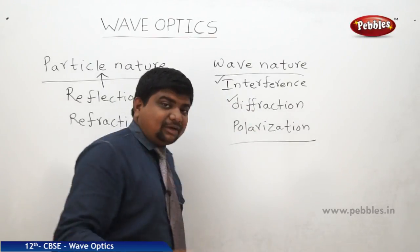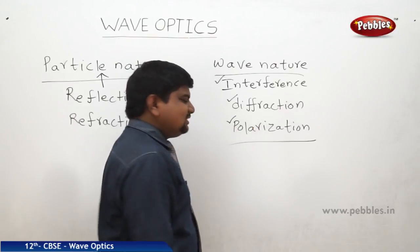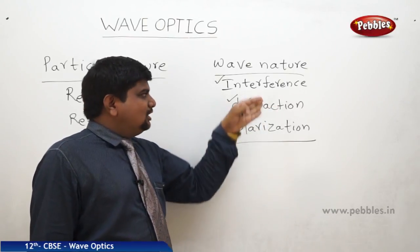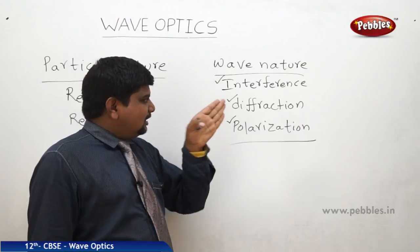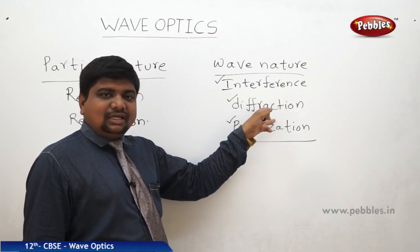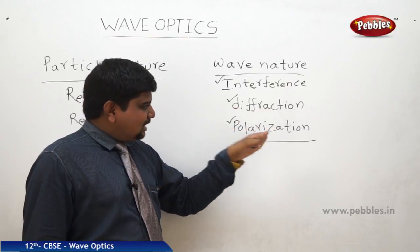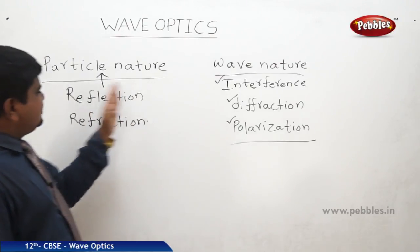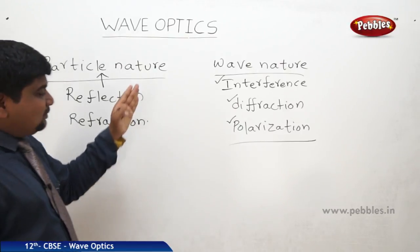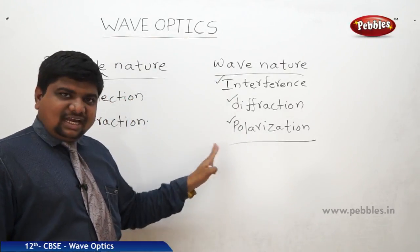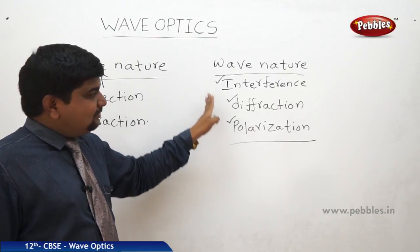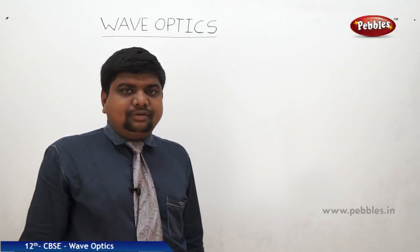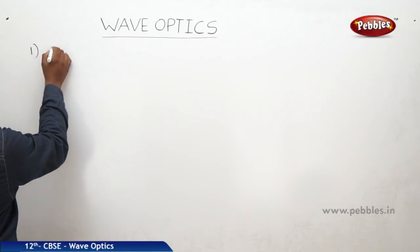In this lesson we are going to discuss interference, diffraction, and polarization, along with the minimum conditions required to exhibit each of these phenomena. Reflection and refraction are covered in the ray optics chapter. To understand these wave phenomena, we first look at the basic theories of propagation of light, starting with Newton's particle or corpuscular theory.